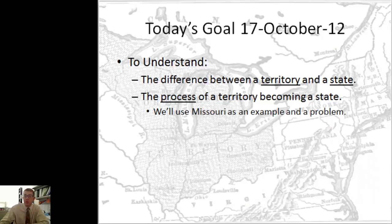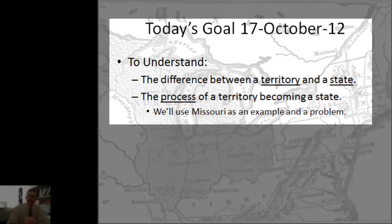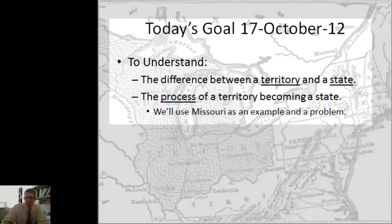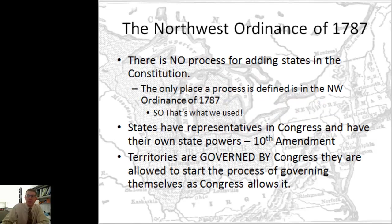Our goal for tonight is for you to understand two things: the difference between a territory and a state — there's a huge difference — and the process of a territory becoming a state. We'll use Missouri as an example, and it also reveals a problem. So let's start here.